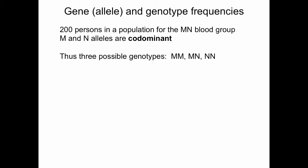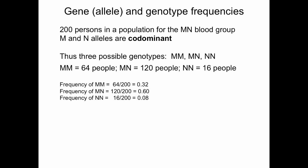Let's look at gene and genotype frequencies. Suppose you have 200 people in a population for the MN blood group. M and N alleles are co-dominant, meaning there are three possible genotypes: MM, MN, or NN. Say you have 64 people that are MM, 120 people that are MN, and 16 people that are NN. The frequency of MM is 64 over 200 or 0.32; the frequency of MN is 120 over 200 or 0.60; and the frequency of NN is 16 over 200 or 0.08.